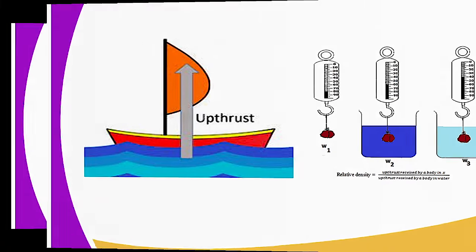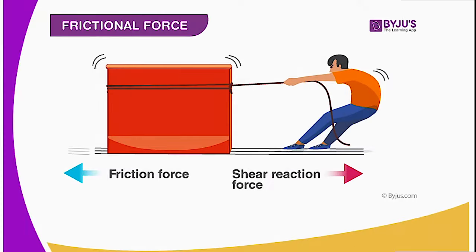Next, we have the frictional force. This is a force that opposes motion. When you try to pull an object on a rough surface, you are going to experience a lot of resistance. You will need a lot of force in order to move your object and overcome the frictional force. This is what makes the object resist movement.